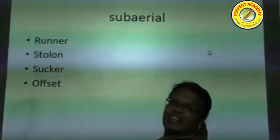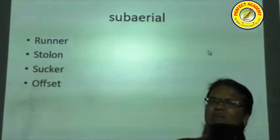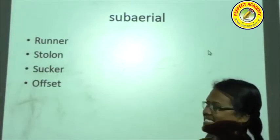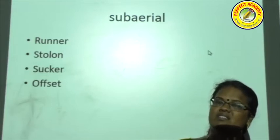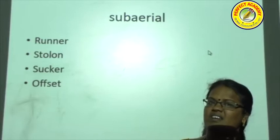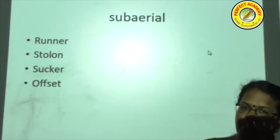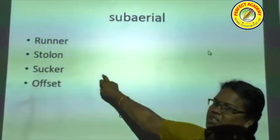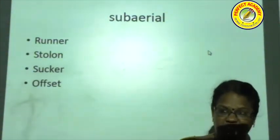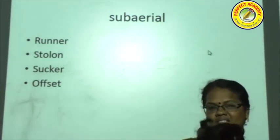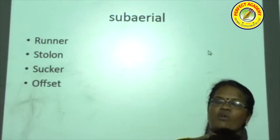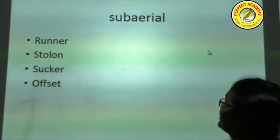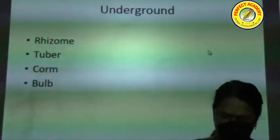The sucker (called kurutu in Tamil) — an example is the banana plant. In banana, many small plants arise around the main plant; these grow from the underground internodal part and emerge above the soil. For offset, the internodal region is shortened and thickened, with leaves formed at the nodal region in a rosette form. A very good example for offset is Pistia.